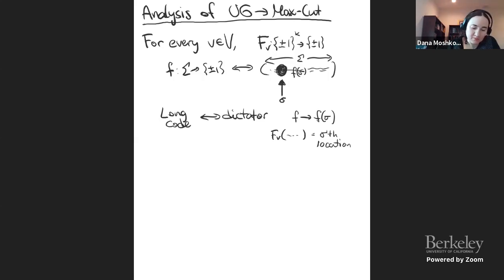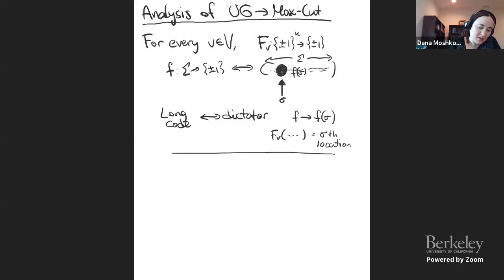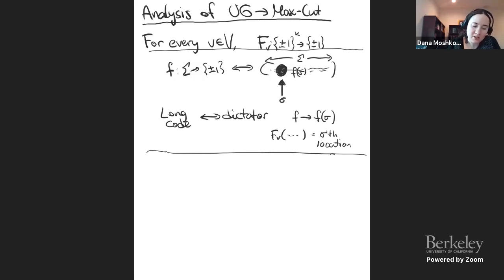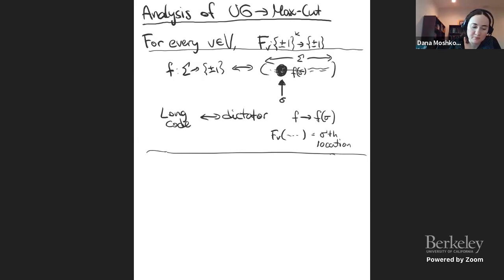I prescribe — ask the algorithm for MaxCut — that for every vertex V, give me f applied to the label σ_V. The cut corresponds to dictator functions. But the algorithm may not give a dictator; it may give a general Boolean function fv. The cut assigns a Boolean value to each vertex f (treated as a vector), and that gives some Boolean function.